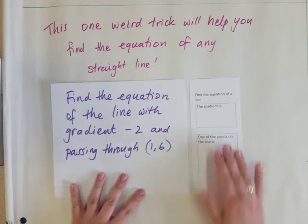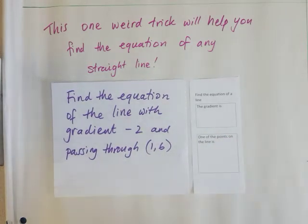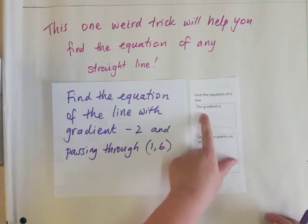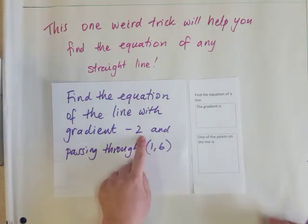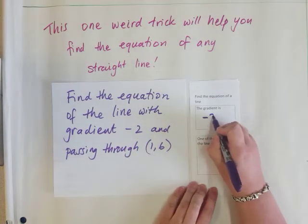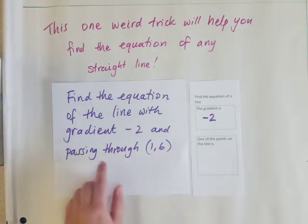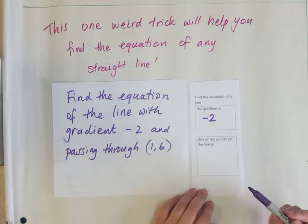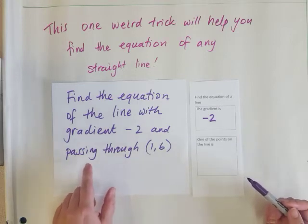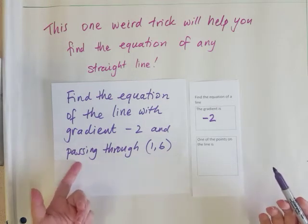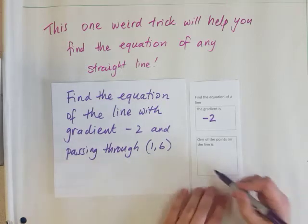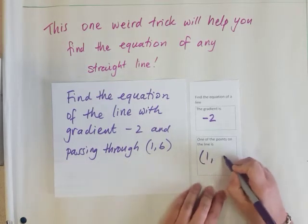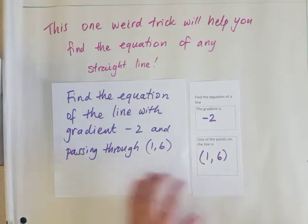Here's our two things we need to know and I'm going to fill it in. The gradient is -2, so I'm going to write down -2. Then we want to write down the coordinates of one of the points. It tells you that this point it goes through is (1, 6), so I'm going to use (1, 6) like this.